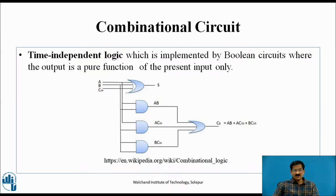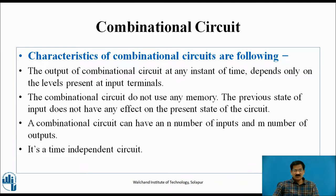Combinational circuit — it is a time-independent logic implemented by a Boolean circuit, where the output is a pure function of the present input only. This is the example of an adder circuit, having A, B, C as inputs to an OR gate, with S as the summation, having a Boolean expression A plus B plus C. Characteristics: output is time-independent, depends only on the levels present at the inputs, combinational circuits don't use any memory, and they can have multiple inputs and outputs.